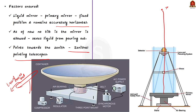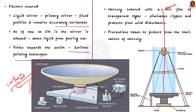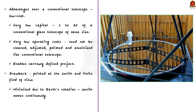The mercury is covered with a thin layer of transparent mylar, kept a few centimeters above the mercury surface. This helps in eliminating the ripples formed due to spinning, and mylar also acts as protection from wind disturbance. Due to the toxic nature of mercury, suitable protections are taken to protect the operators of the telescope. The major advantage of the liquid mirror telescope over a conventional telescope is that it is very cheap — only 1 to 2% of the cost of a conventional glass telescope mirror of the same size.